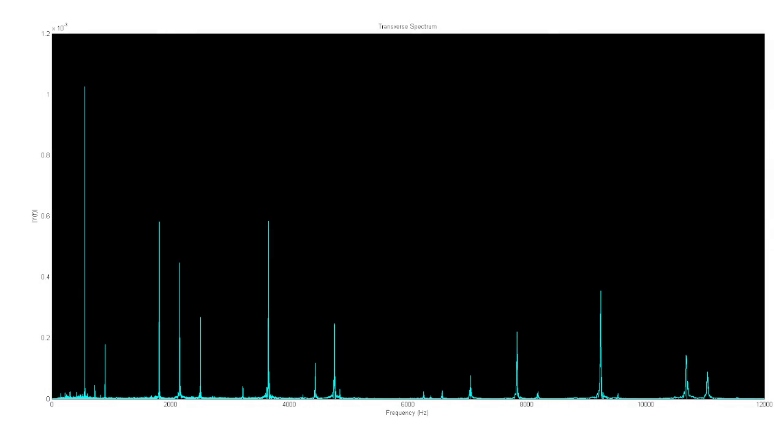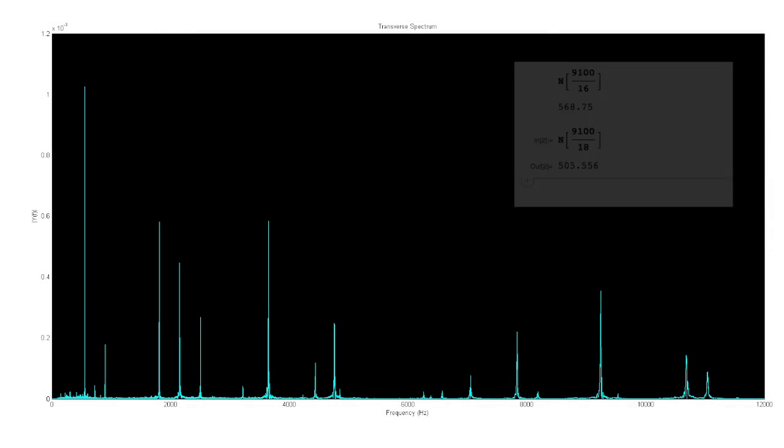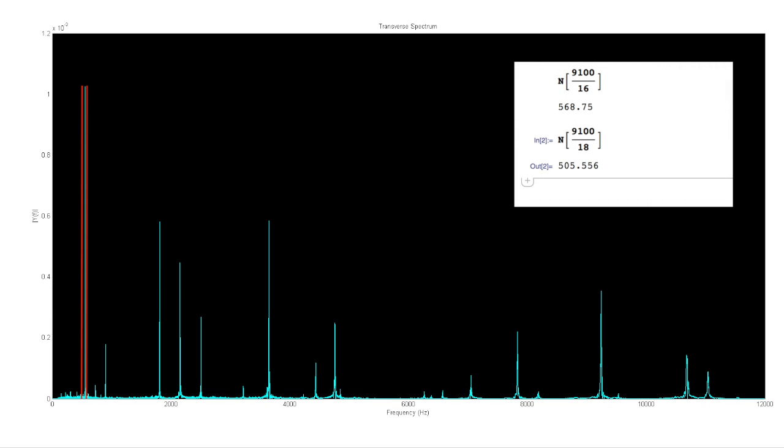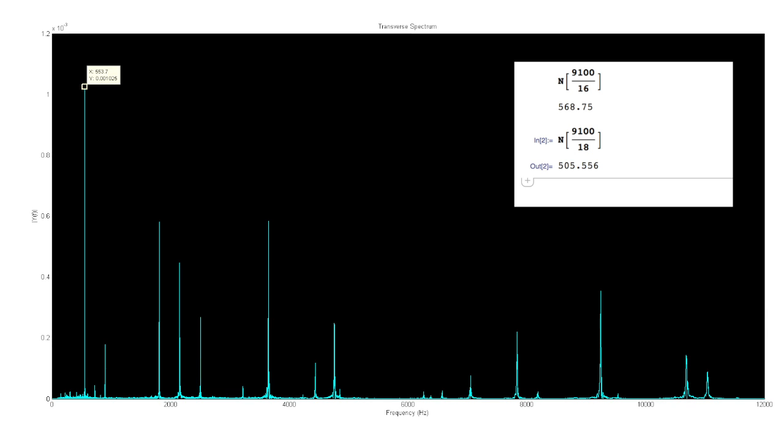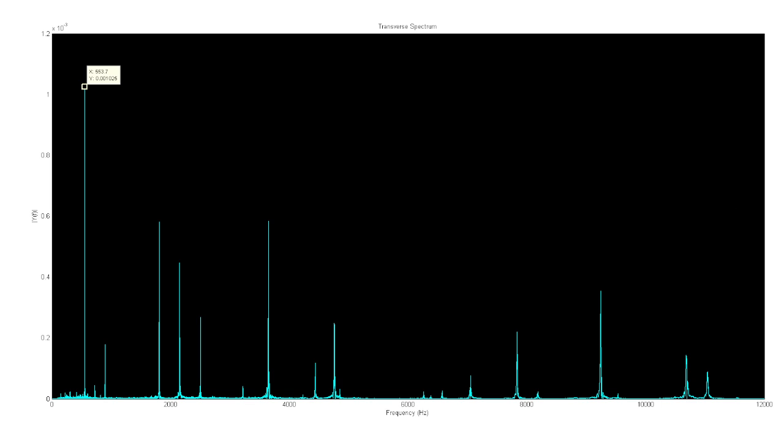From this footage, recorded at 9100 frames per second, we can determine the major frequency involved by counting the number of frames it takes to complete one oscillation. It takes somewhere between 16 and 18 frames. This corresponds to a range of roughly 60 Hz, which is marked in red on the spectrum. As is evident, the peak frequency falls nicely in this range, and from an analysis of the audio recording, this peak occurs at 553.7 Hz.